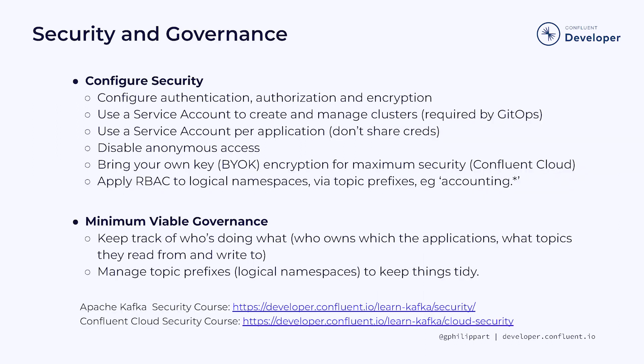When it comes to security and governance, try to keep it simple. For the security aspect, start by configuring authentication, authorization, and encryption. We have a course on how to implement security with Apache Kafka and another one for doing the same with Confluent Cloud. Here are a few other tips: use a service account to create and manage clusters — it's also required to implement the GitOps approach. Use a service account per application.